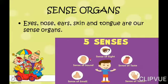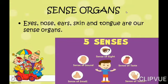So ears, eyes, tongue, skin and nose — they all are sense organs. And sense of sound, sense of sight, sense of taste, sense of touch and sense of smell — they all are the senses. Make sure you understand the difference between sense organs and senses.